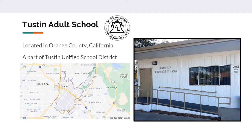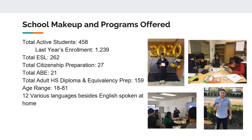Tustin Unified is the school district we are part of — a TK-12 district that services roughly 24,000 students district-wide. For Tustin Adult School this school year, we currently have 458 active students. Last year we had about 1,239 students, so it's pretty significant. We've been fighting to have students come back on campus or online. Tustin Unified did open back up in September.